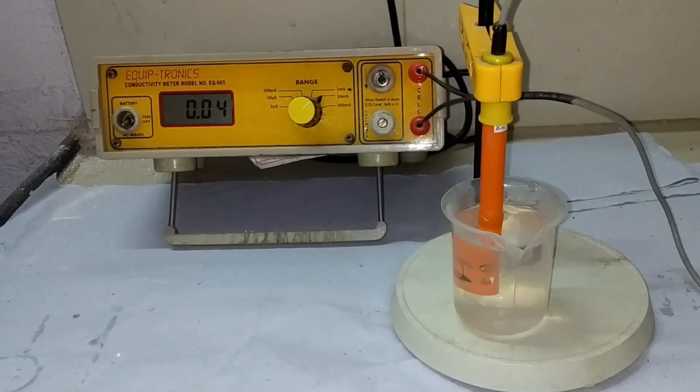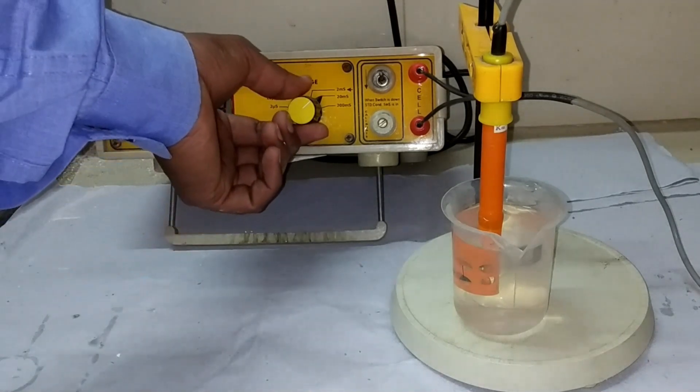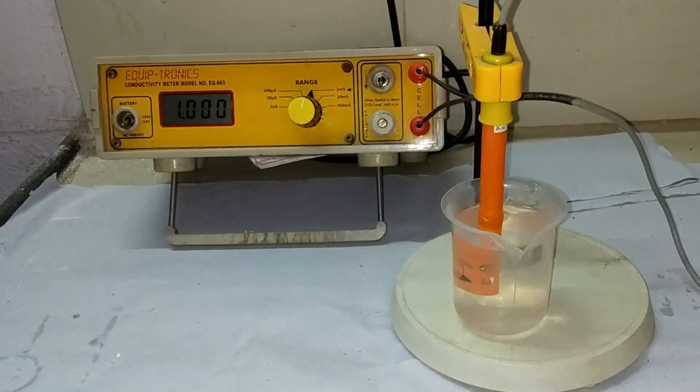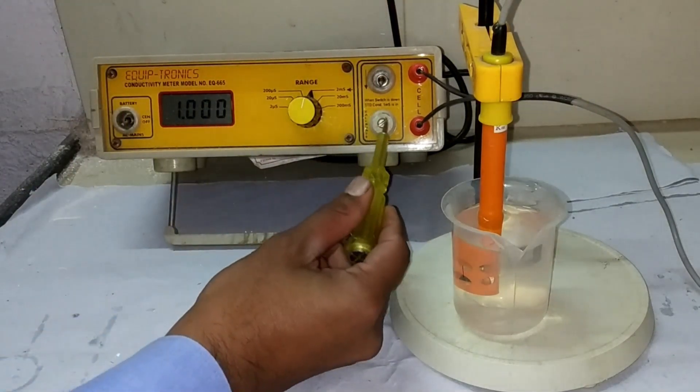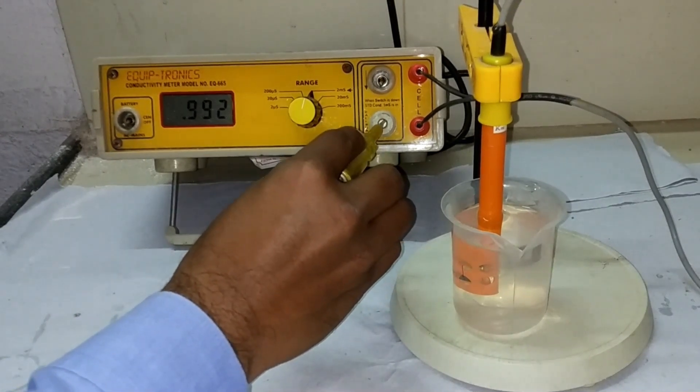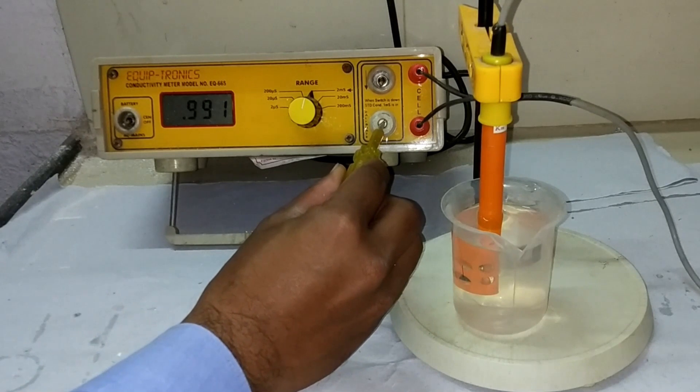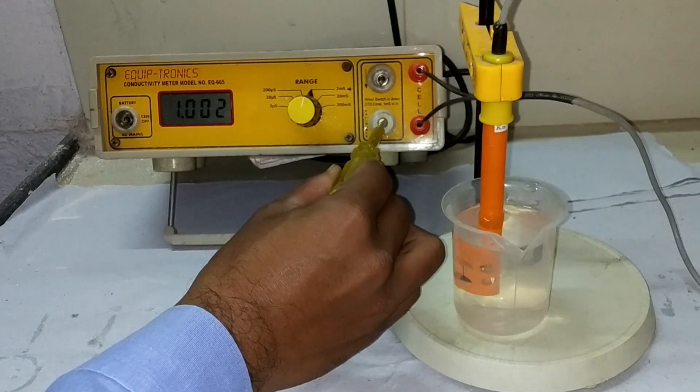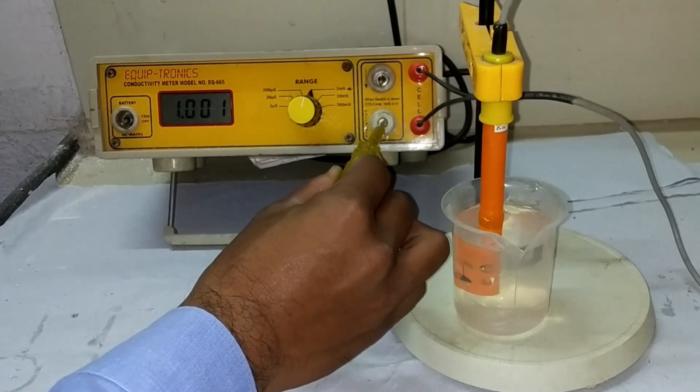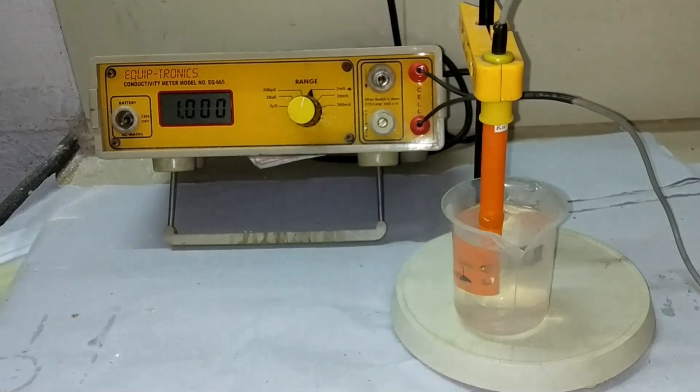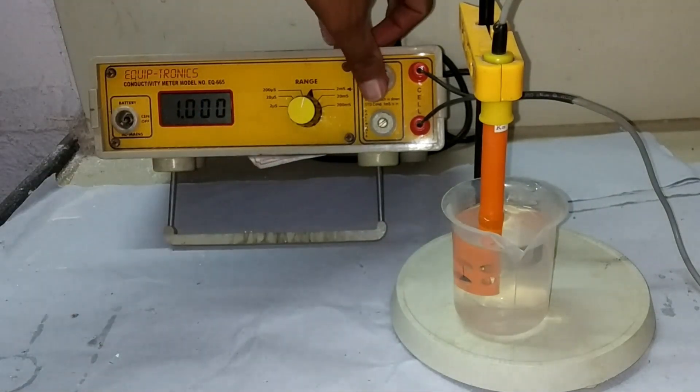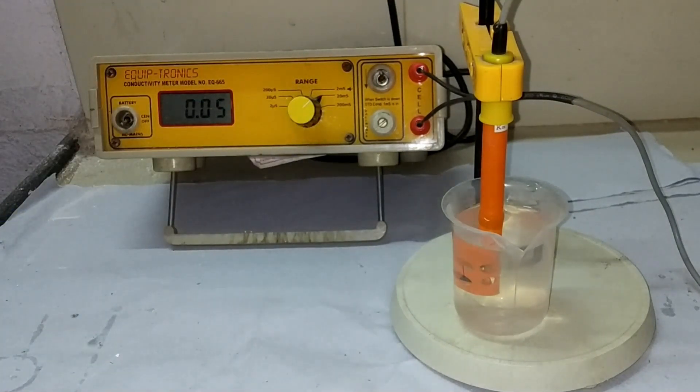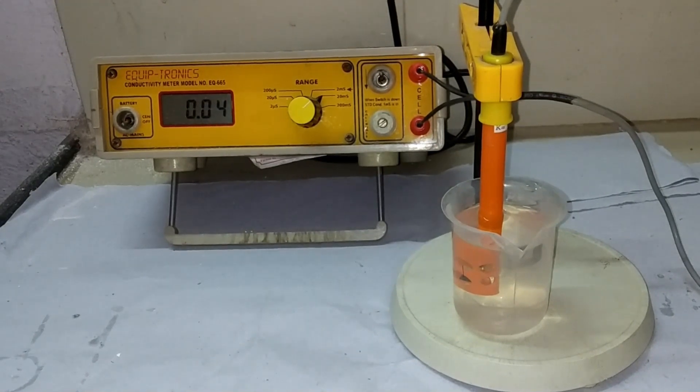Shift the Range Knob from 20 millisiemens to 2 millisiemens. Shift down the Standardization Knob, then adjust the display reading to 1.000 using the calibration knob. Shift the Standardization Knob to Up. Shift back the Range Knob from 2 millisiemens to 20 millisiemens. Now the Digital Conductivity Meter is ready for experiment.